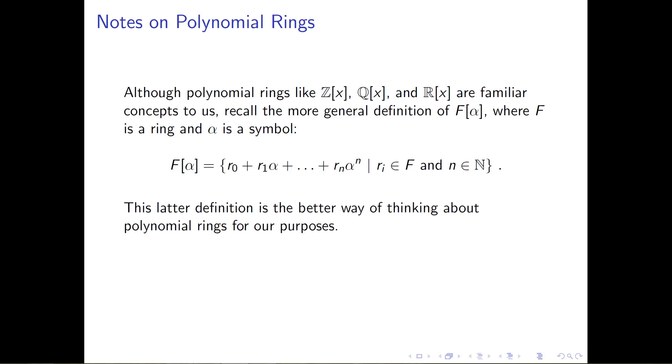And I want to remind you and just sort of stress, this is just a pedagogical point, but this latter definition, this adjoined notation, is a better way of thinking about polynomial rings for our purposes. That is, in high school, when you're in a normal and not abstract algebra class, when you're talking about polynomials, you're often thinking about them as functions of the ring that you started with. So you're thinking of something like R adjoined x, polynomials with real coefficients, as some sort of function that just maps the real numbers to the real numbers.